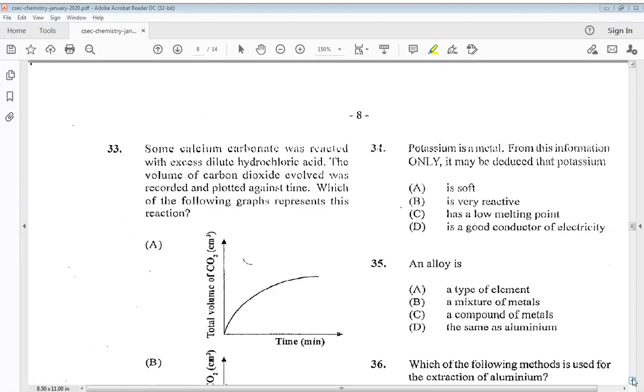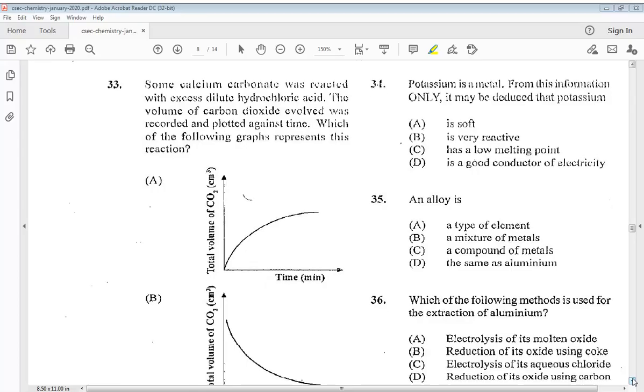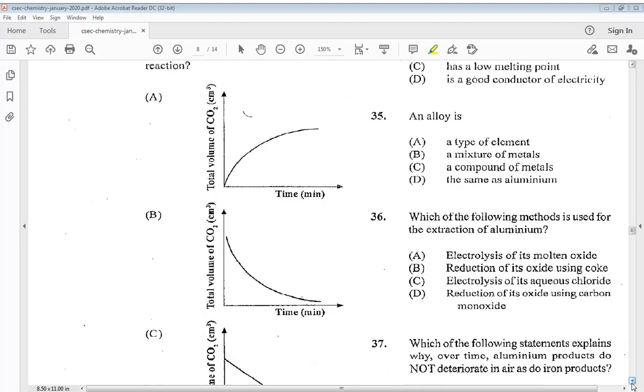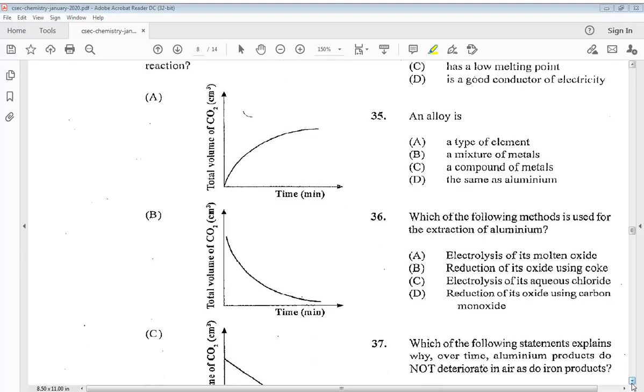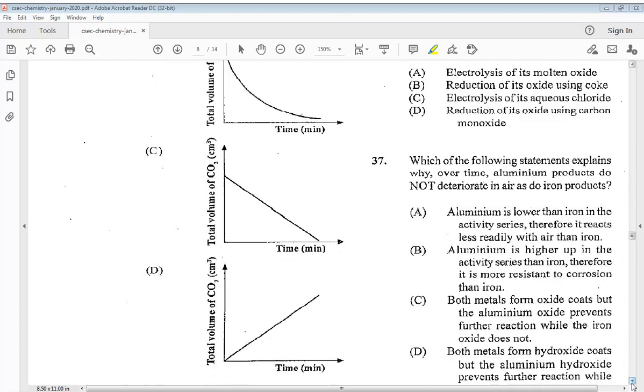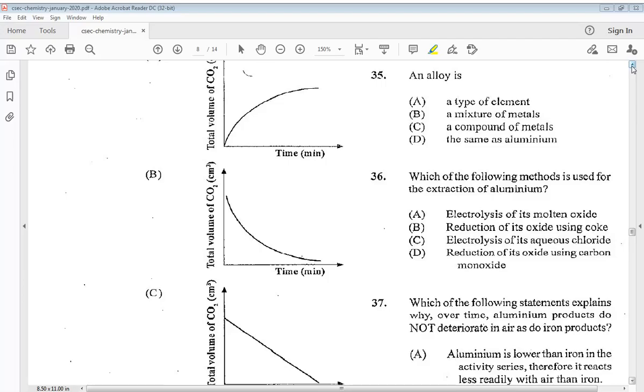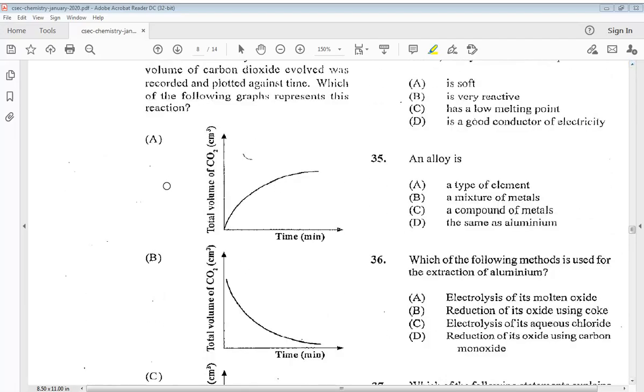Question 33. Some calcium carbonate was reacted with excess dilute hydrochloric acid. The volume of carbon dioxide evolved was recorded and plotted against time. Which of the following graphs represents this reaction? Let's take a look at them. So it is A. A would be our answer for 33.